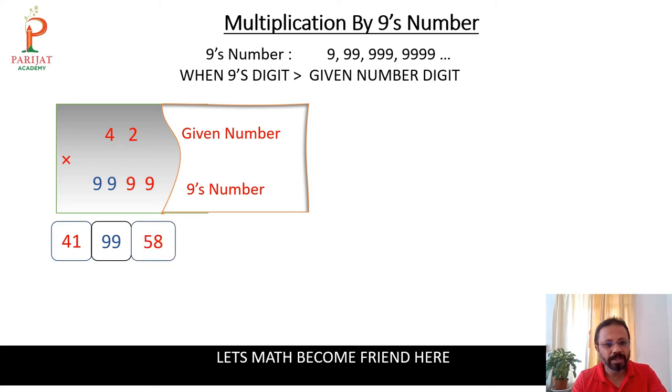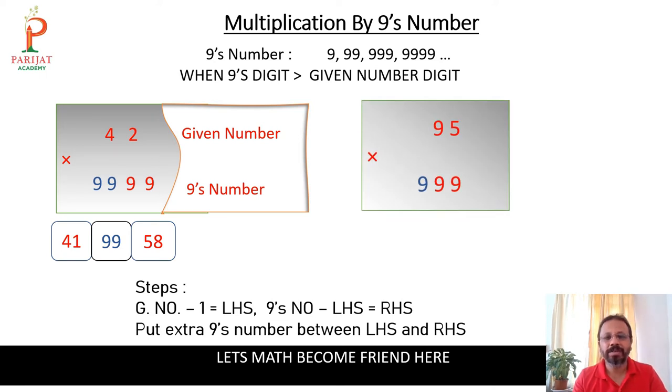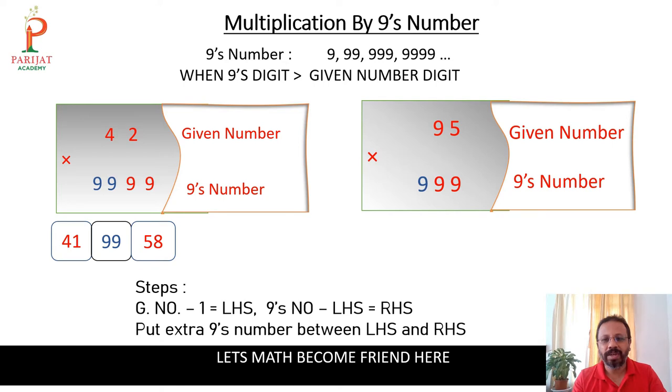We will go with one another example. Suppose 95 times 999. So 95 again given number, 999 is 9's number. So 95 minus 1 which will be 94.